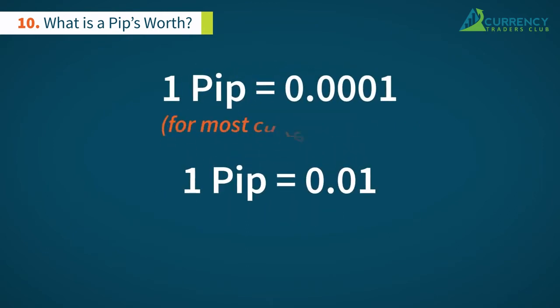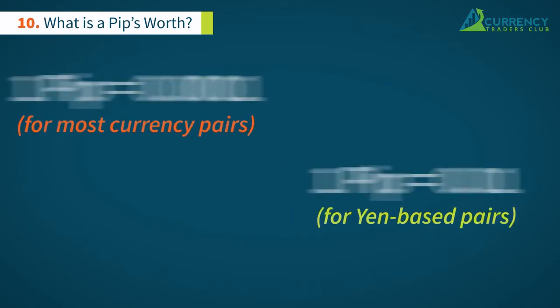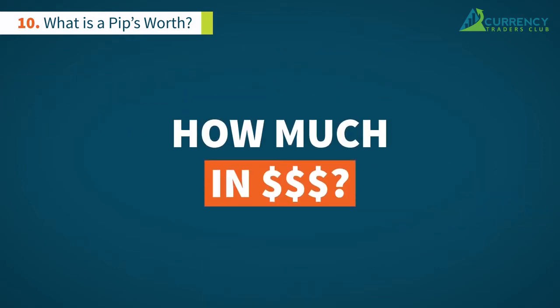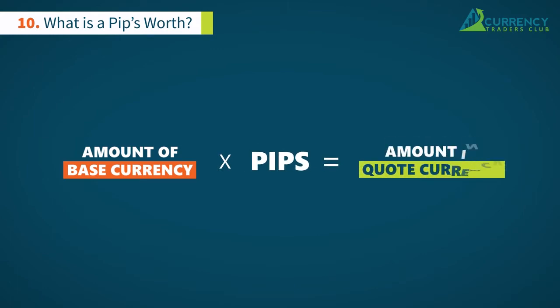But how do we calculate the value of a pip in terms of its monetary worth? The formula is simple: the amount of the base currency in lots times the number of pips equals the amount in quote currency.